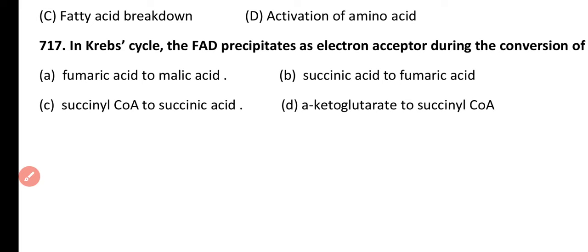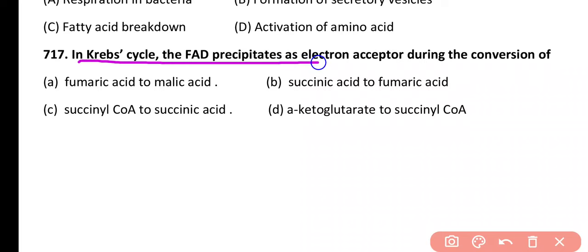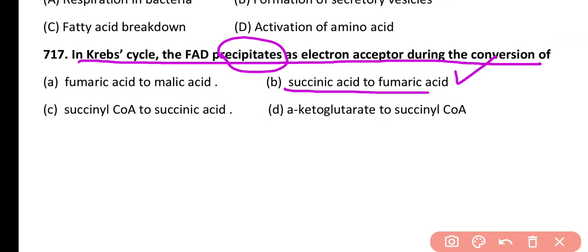Question 717. In the Krebs cycle, FAD participates as an electron acceptor during conversion. Correct answer is option B. When succinic acid is converted to fumaric acid, FAD acts as the electron acceptor and is reduced to FADH2.